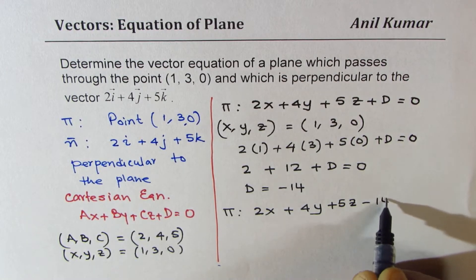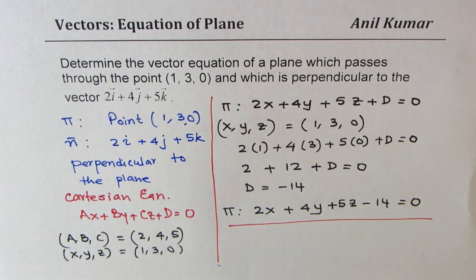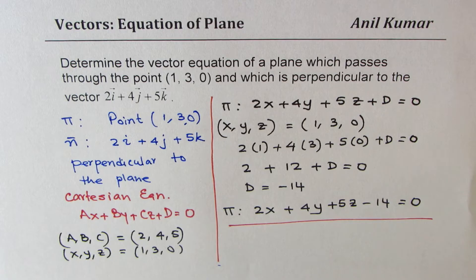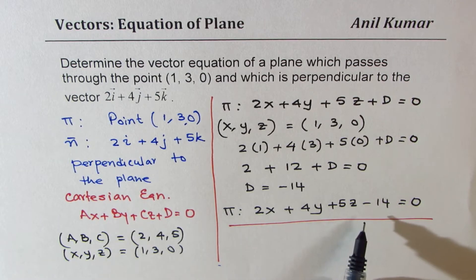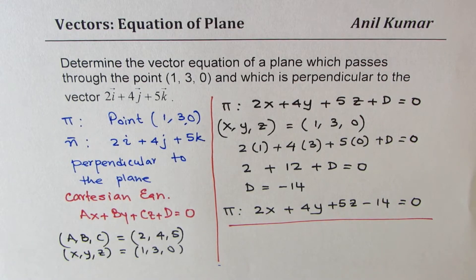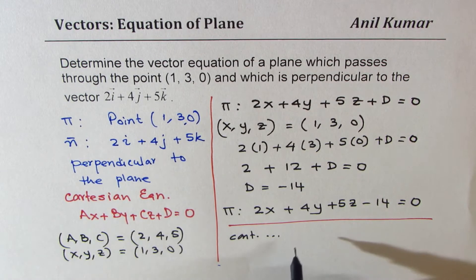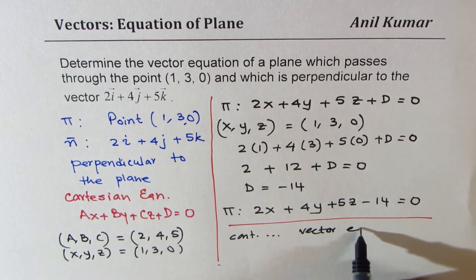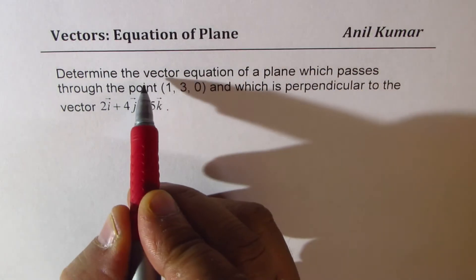That gives us the Cartesian equation of the plane: 2x plus 4y plus 5z minus 14 equals 0. The steps are clear — that is the Cartesian equation. However, we need to find the vector equation of the plane, so we'll continue to the next section and derive it from here.